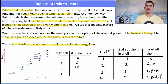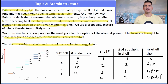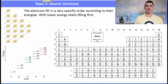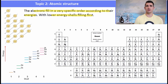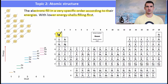We now use this model to write electron configurations — in IB chemistry these are the only configurations required. Electrons fill shells and subshells in order of lowest energy first. The first shell fills with the s subshell: hydrogen is 1s¹, helium is 1s². That is now a full shell and subshell.